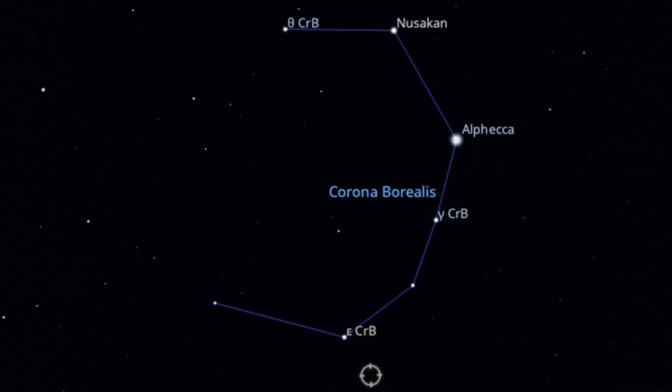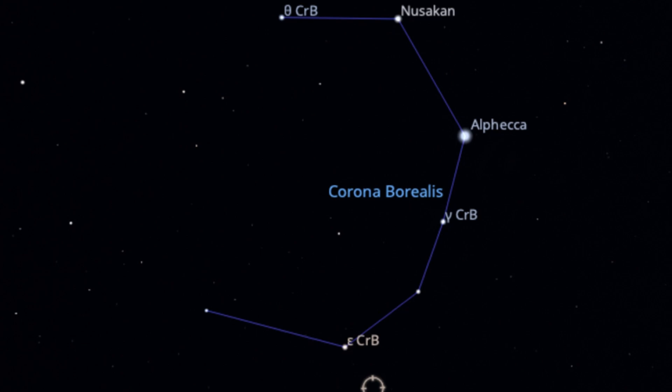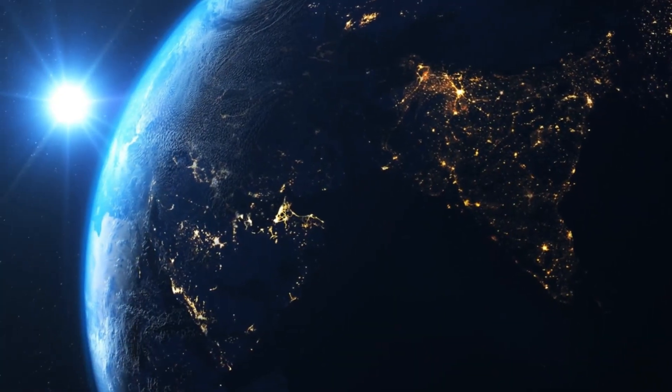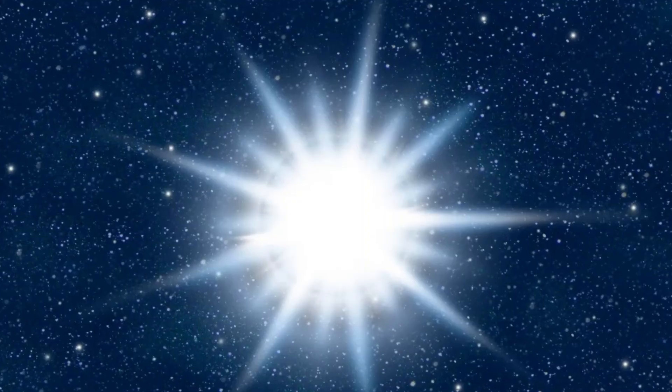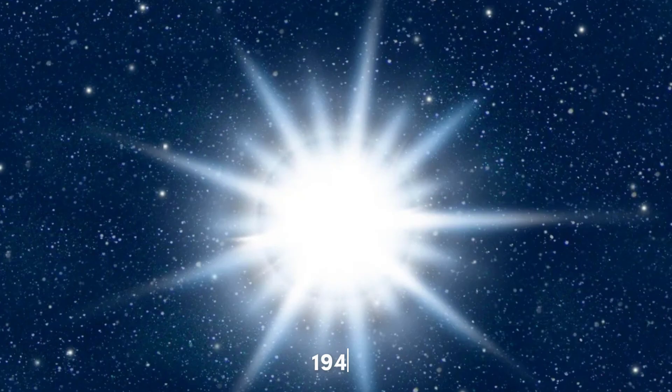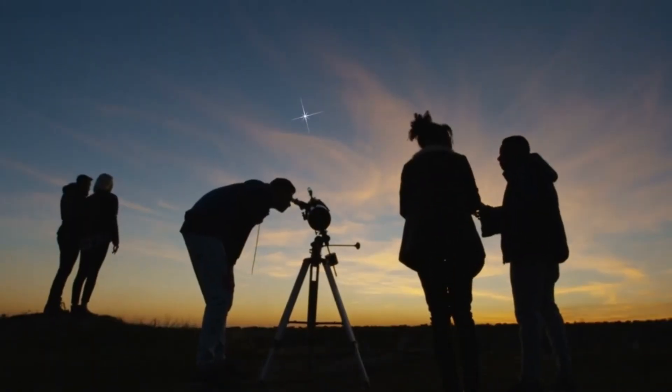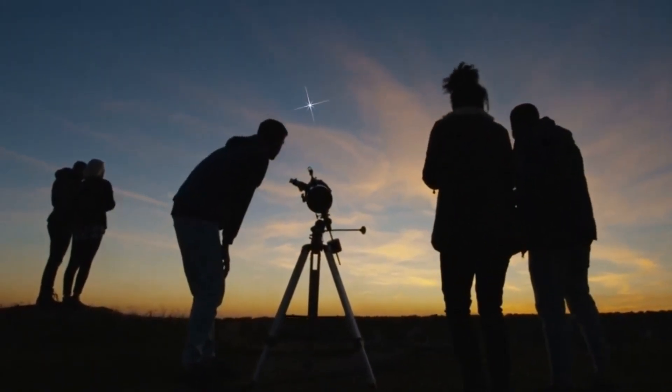T Coronae Borealis, often called the Blaze Star or TCRB, is a binary system situated in the Northern Crown constellation. It's roughly 3,000 light years from Earth. It last experienced a significant brightening in 1946. Astronomers are expecting it to brighten again between now and September 2024.